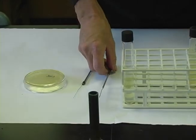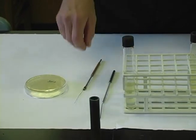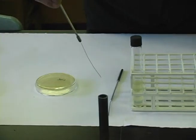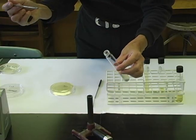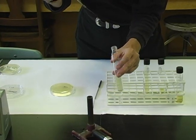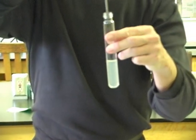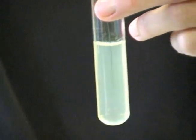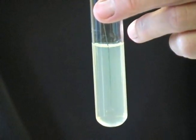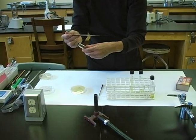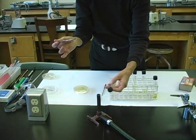If we wish to transfer our microbes to an agar deep, we will use our inoculating needle. We flame our needle. With agar deeps, we are going to perform what's called a stab. With the needle, we will stab straight down through the middle of the agar deep. We try not to touch the glass at the bottom of the tube. We withdraw, replace the cap, and flame the caps.